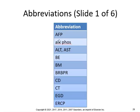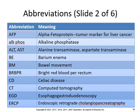Here are some abbreviations. AFP means alpha-fetoprotein. ALP means alkaline phosphatase. ALT and AST are alanine aminotransferase and aspartate aminotransferase — these are all blood tests. BE is barium enema. BM is bowel movement. BRBPR is bright red blood per rectum — we don't want to see that. CD is celiac disease. CT is computed tomography. EGD is esophagogastroduodenoscopy. ERCP is endoscopic retrograde cholangiopancreatography — break it down: graphy, pancreato, angio, col.